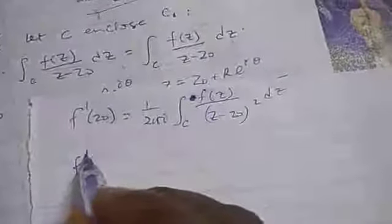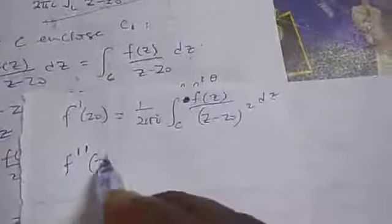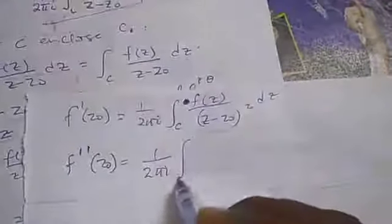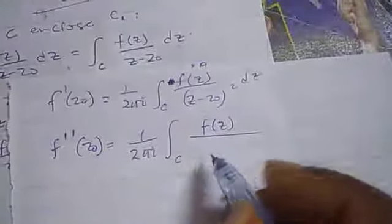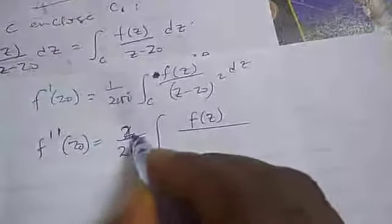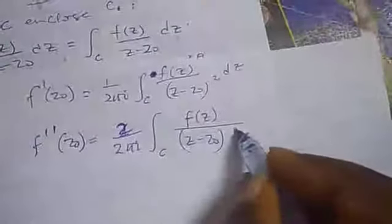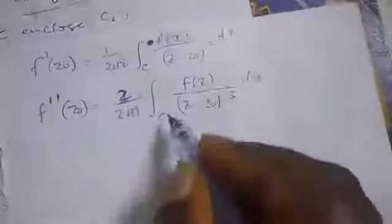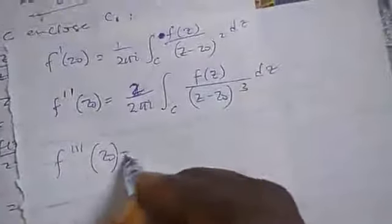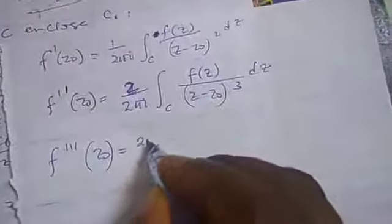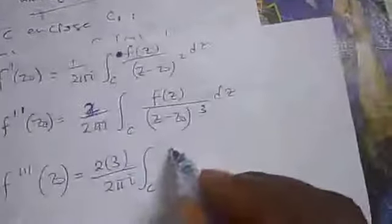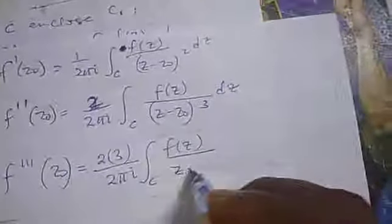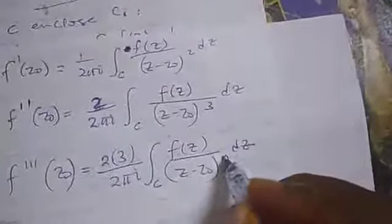If we differentiate it further, f″(z₀) equals 1/(2πi) times the integral — when we differentiate, the 2 comes down — giving us 2/(2πi) times the integral of f(z)/(z minus z₀)³ dz. Differentiating again, the 3 comes down, giving 2·3/(2πi) times the integral of f(z)/(z minus z₀)⁴ dz.